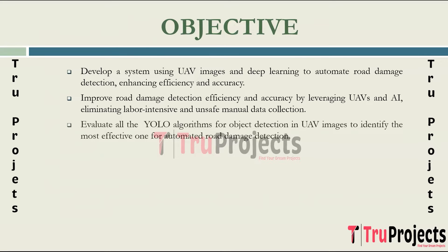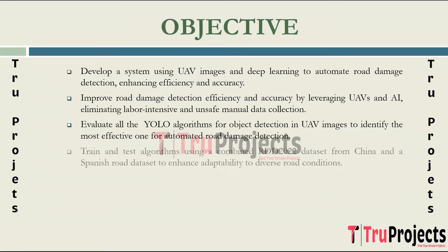The project focuses on evaluating and comparing three algorithms — YOLO V5, YOLO V7 and YOLO V8 — for object detection and localization in UAV images, with the goal of identifying the most effective algorithm. Utilizing a combination of the RDD 2022 dataset from China and a Spanish road dataset, the project aims to train and test the algorithms comprehensively, incorporating diverse data sources to enhance the model's adaptability to different road conditions.